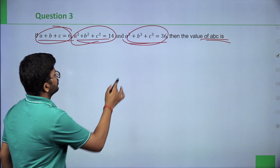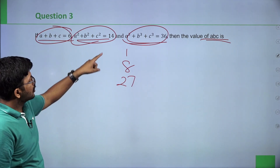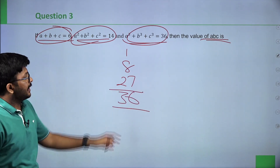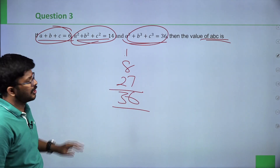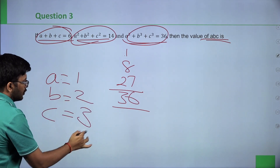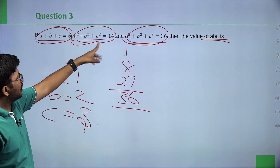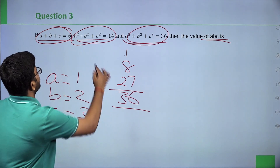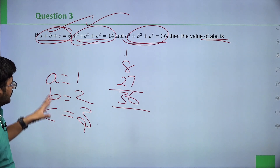The cube roots give us a=1, b=2, c=3. Let's verify: a square plus b square plus c square = 1 plus 4 plus 9 = 14 — satisfied. And a plus b plus c = 1 plus 2 plus 3 = 6 — also satisfied. All conditions are met. The value asked is abc, so multiply them: 1 into 2 is 2, 2 into 3 is 6. Therefore abc equals 6.